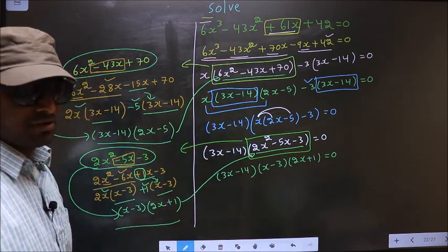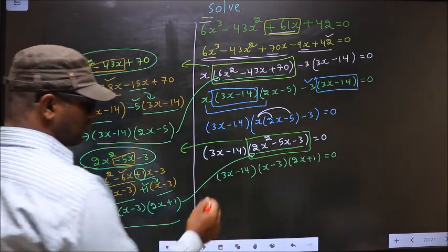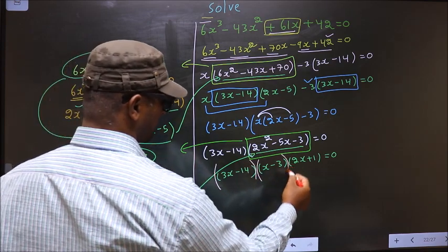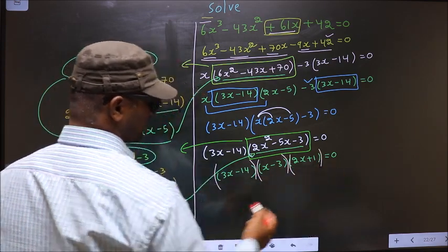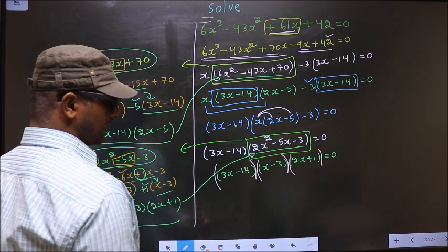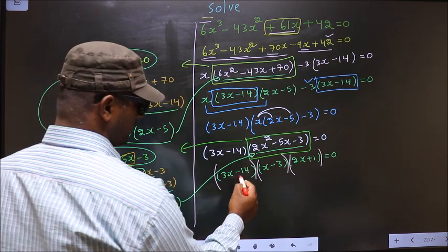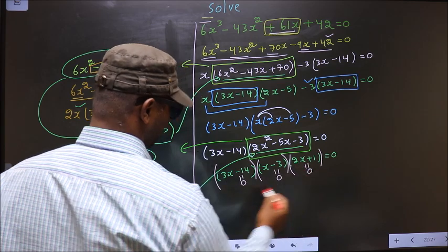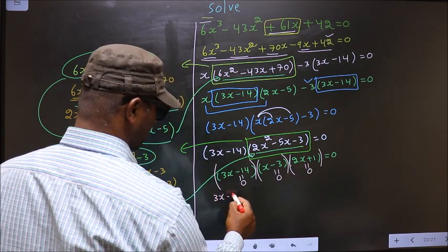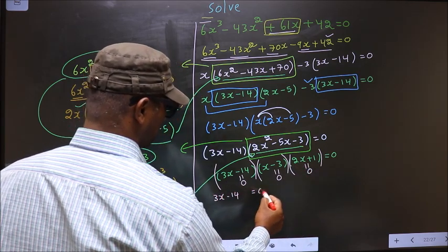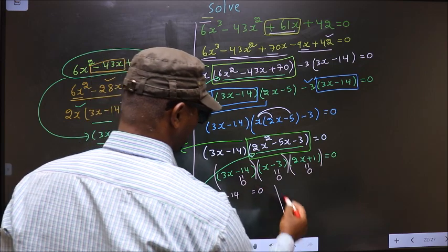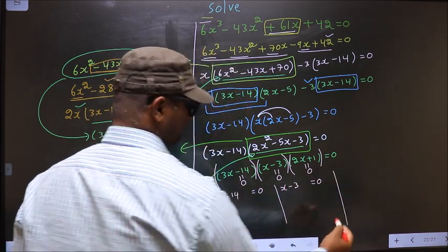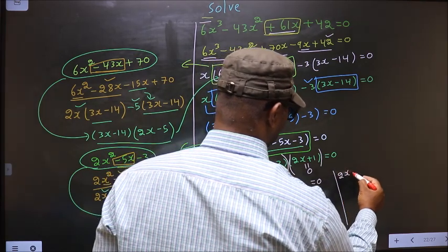We should find the values of x. Here we got a product of brackets equal to 0. So to get the values of x, we should equate each bracket to 0. That is: 3x minus 14 equal to 0, x minus 3 equal to 0, and 2x plus 1 equal to 0.